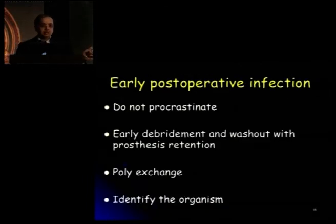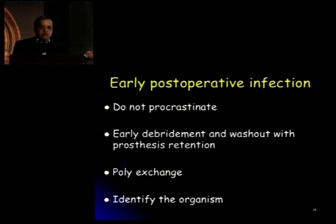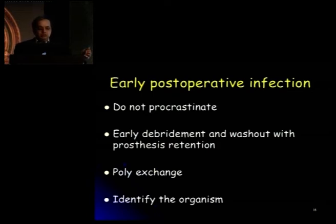Any postoperative infection that is acute and the wound is leaking — do not procrastinate. Early debridement and washout with prosthetic retention is really the key. During surgery, you need to do a complete synovectomy, even a poly exchange, to get to the back of the knee if it is the knee. For the hip, you can dislocate and give a thorough lavage and debridement. It's important that you take multiple samples during surgery for tissue culture, noting that patients are invariably on antibiotics at this stage.